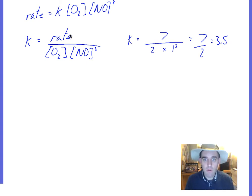So 1, 2, and 7. I've just substituted them into the places that are here. Rate was 7, O2 was 2, NO was 1 to the power of 3. Then work that through: 7 over 2, which gives you 3.5.